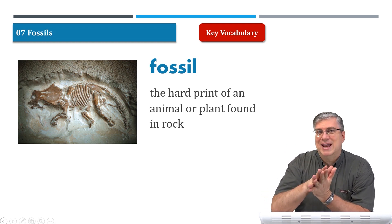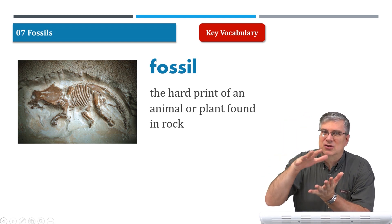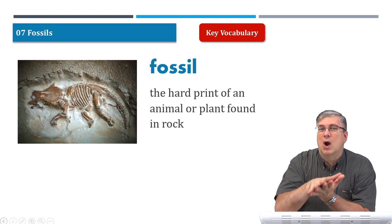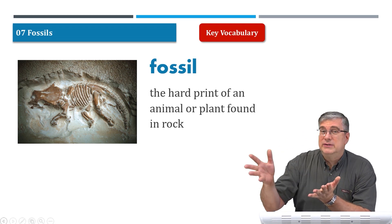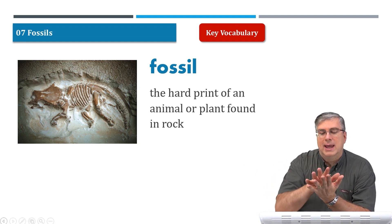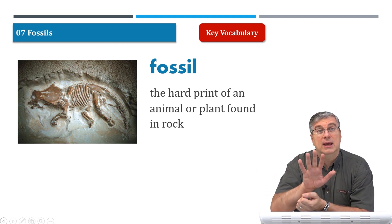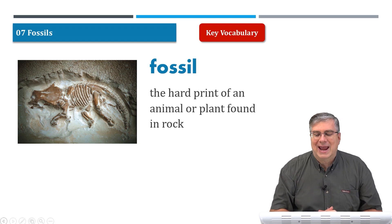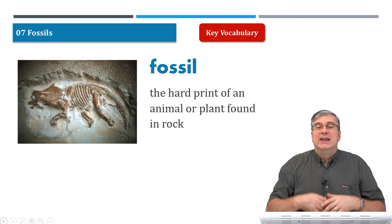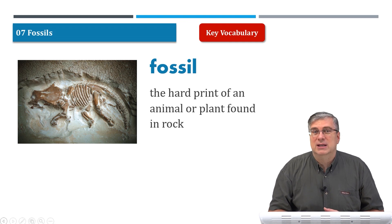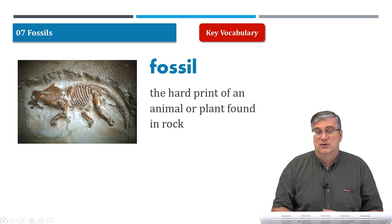Thousands, hundreds of thousands, even millions of years later, that mud has turned into hard rock because so much material is on top. And millions of years later, maybe somebody moves the rock away and sees a handprint — it could be your handprint! That's a fossil — the hard print of an animal or plant found in rock, formed over millions of years.